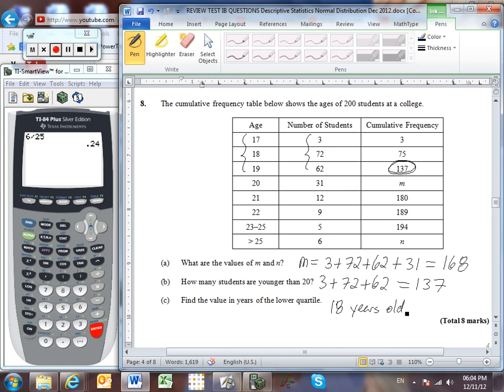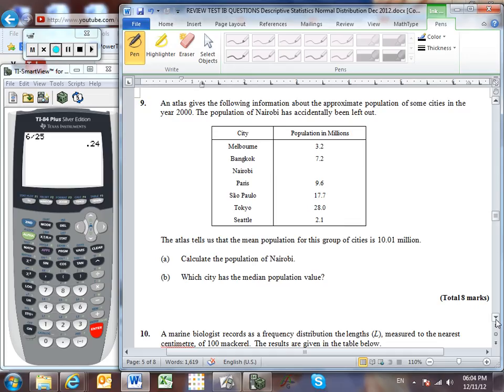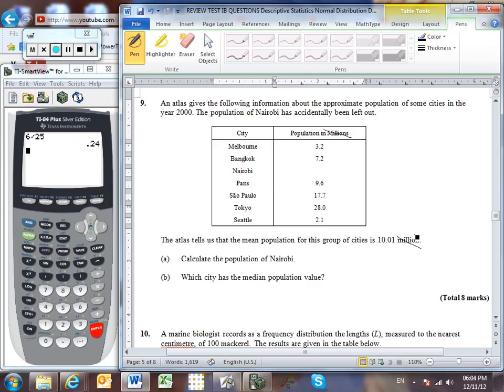Well I wish all of them were as quick as that. Let's move on to number 9. Okay, an atlas has given us this information about the population of cities in the year 2000, but Nairobi was left out. The atlas tells us that the mean population is 10.01 million. Let's just ignore the millions for a moment. It's kind of going to throw us off. Let's just ignore it and just deal with the numbers. And then we can throw a million on to the end in our answer. And so we know that the sum, let's call this value x.